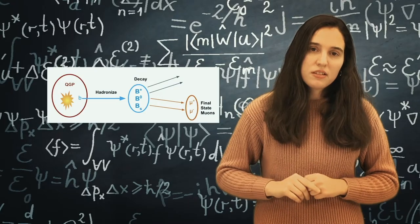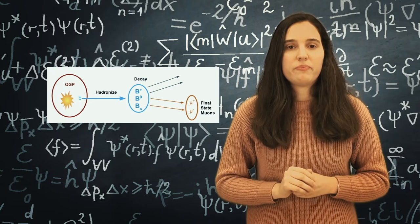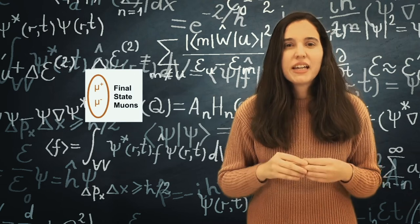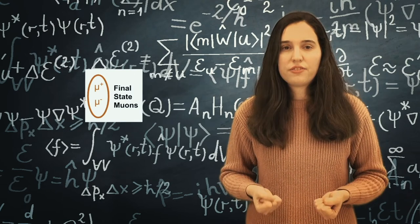From the particles the B mesons decay to, we can identify them. The decay channels used in this analysis contain two opposite charged muons, taking advantage of the great muon identification of CMS.